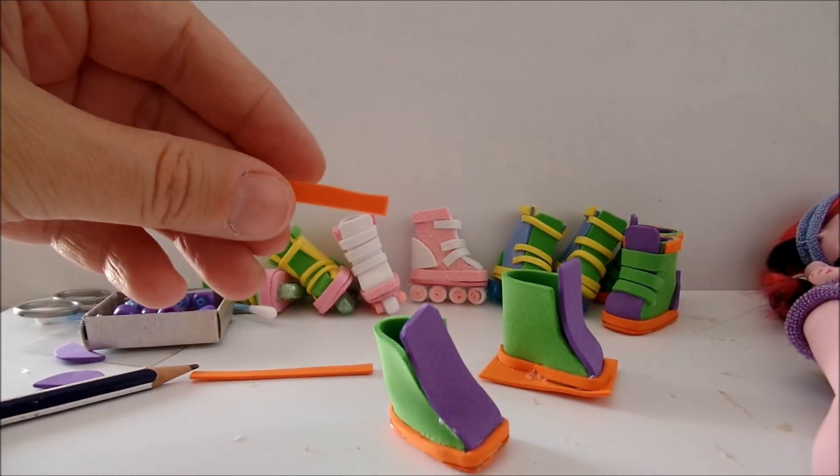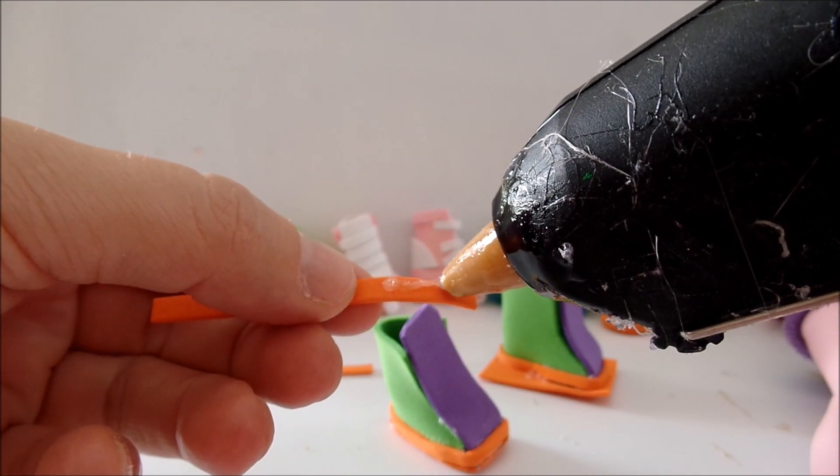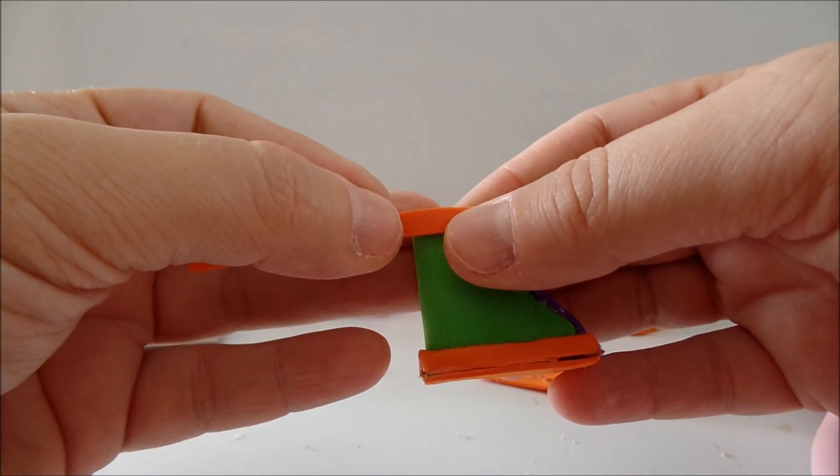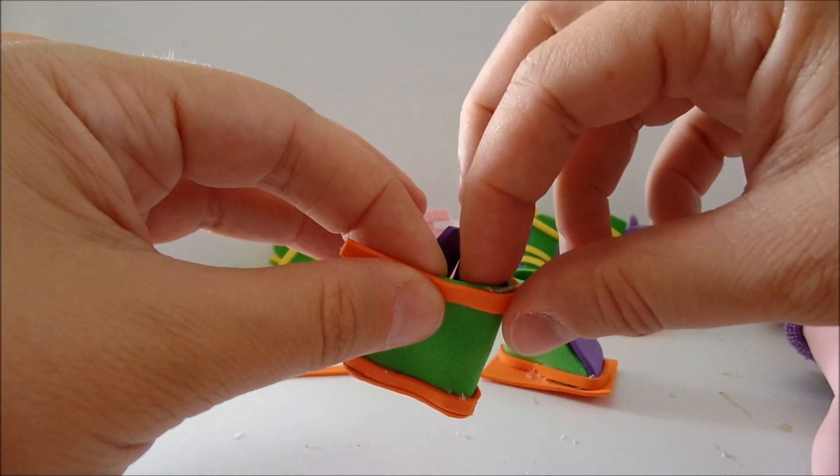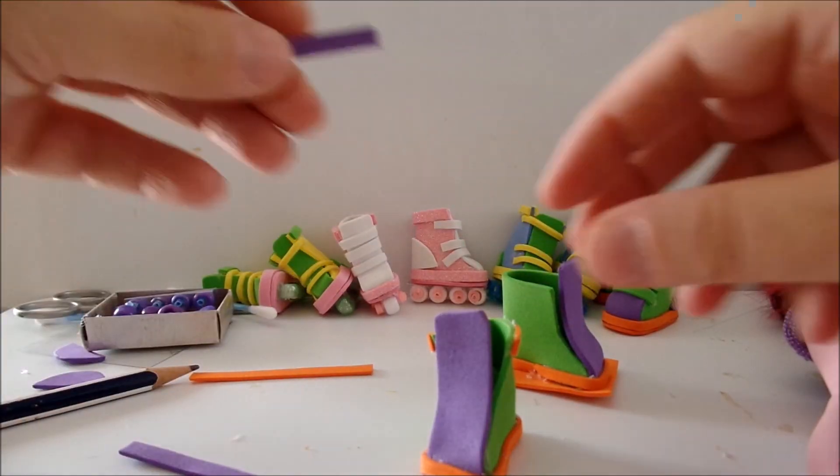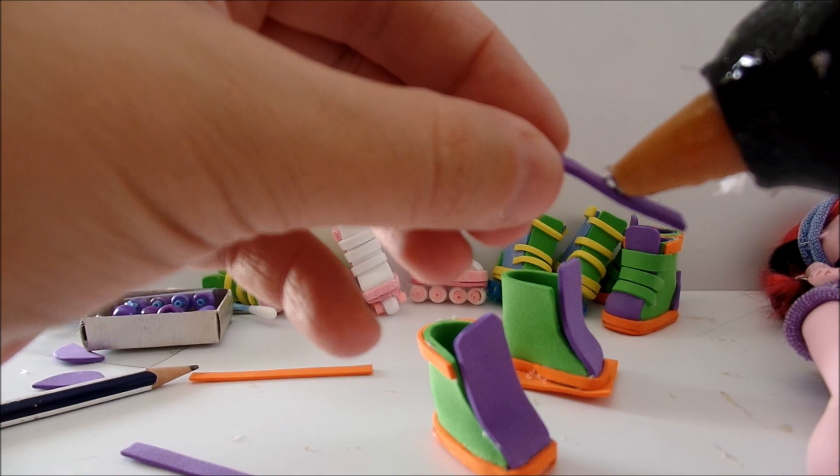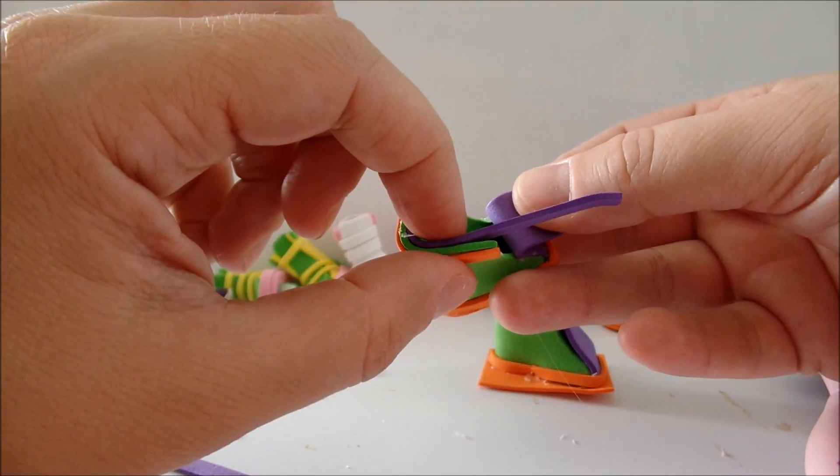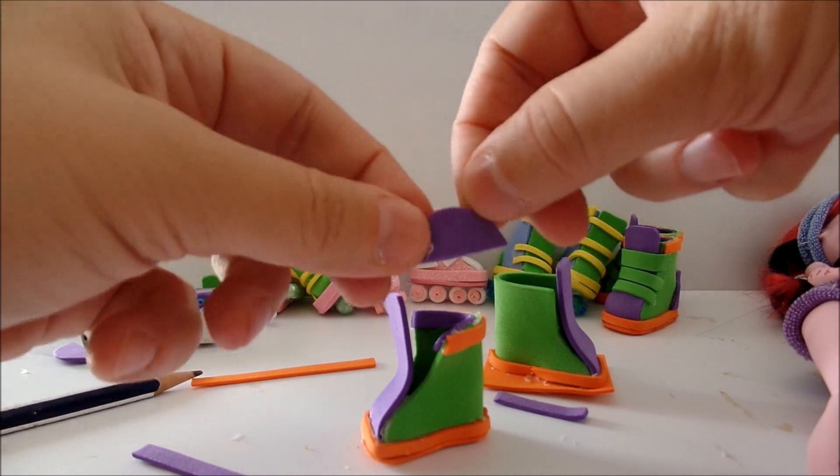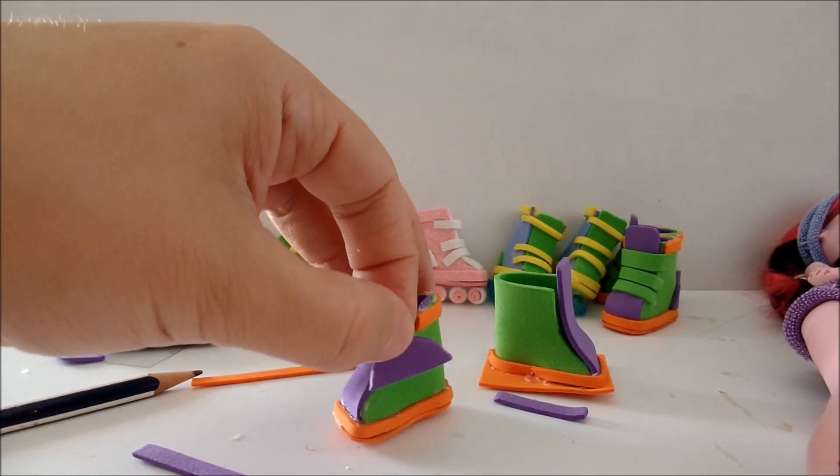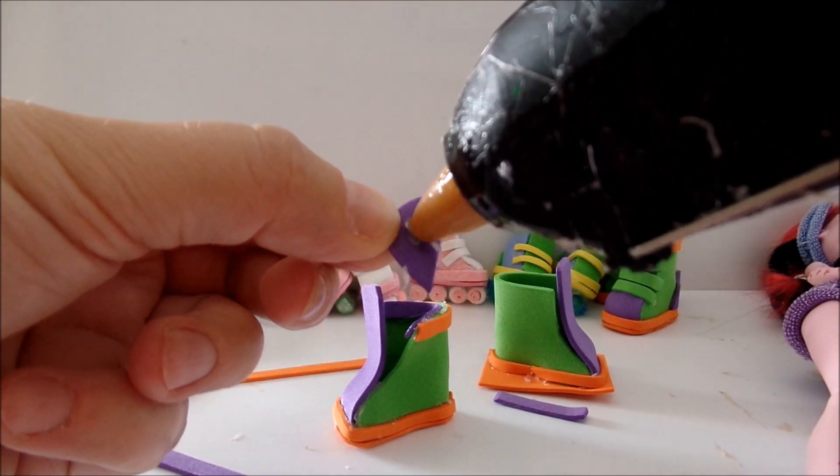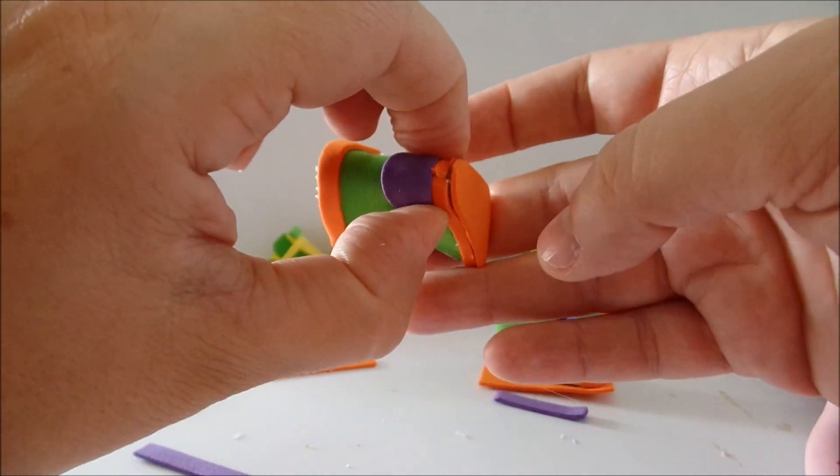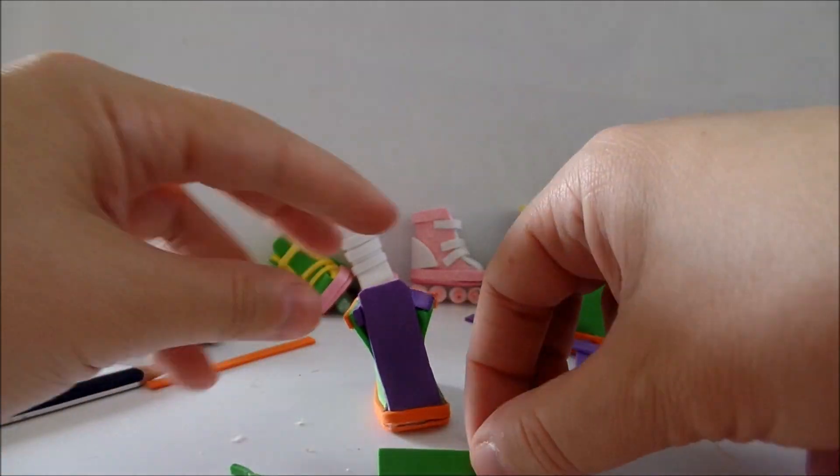Now we can start with the details. This part will go around the top. This part will go inside. This little part will go at the back of the shoe, and these three parts will go at the front.